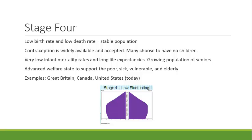Life expectancies are creeping up not necessarily because the oldest people are living longer, but because on average more people are living into old age. In stage four, we also start to see advanced welfare states develop to support the sick, the vulnerable, the poor, and the elderly. Examples of stage four countries include Great Britain, Canada, and the United States today — most developed countries fall into stage four.